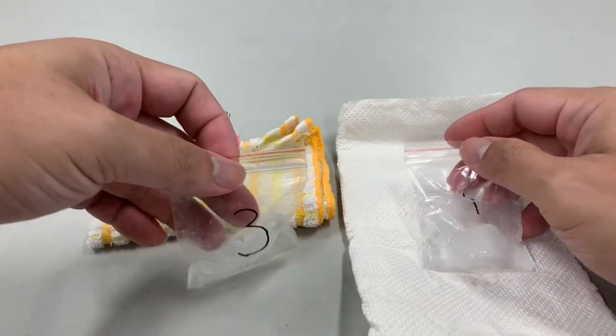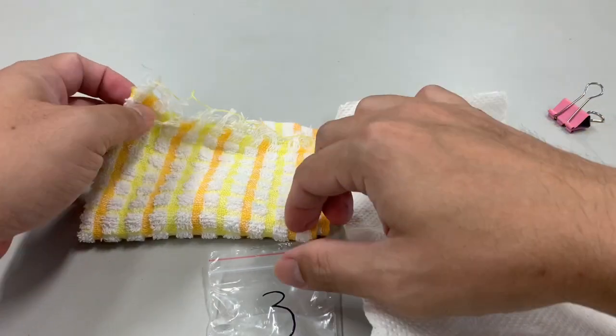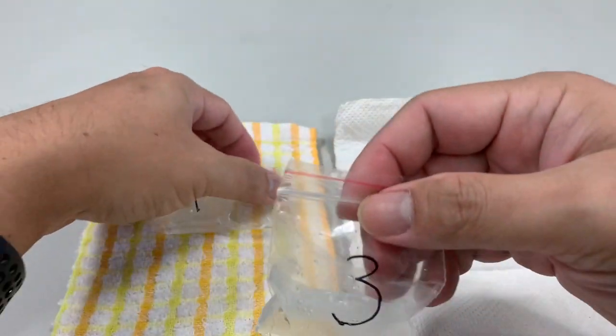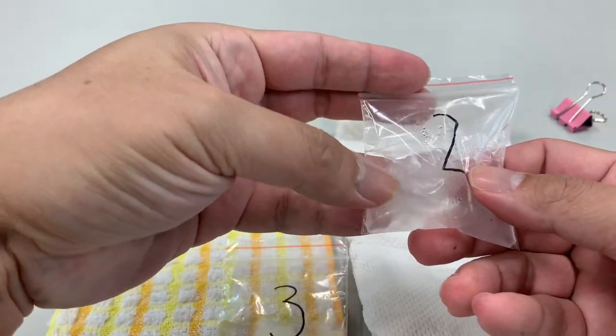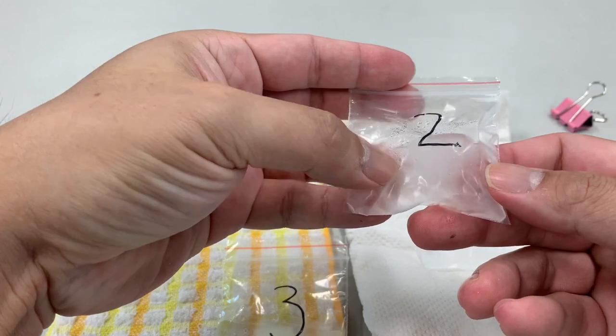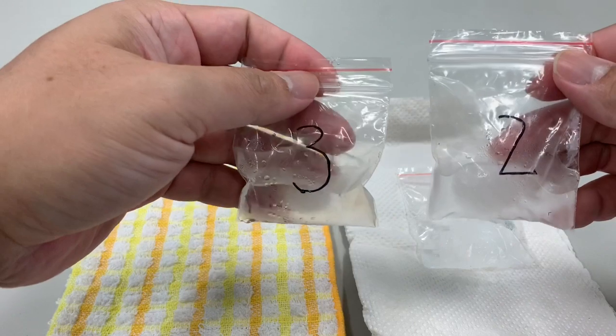Let's take a look at sample number 2. Number 2 has more ice cube than sample number 3. Let's compare them.